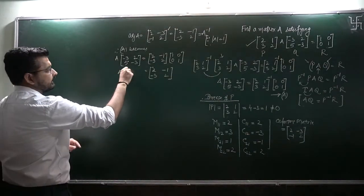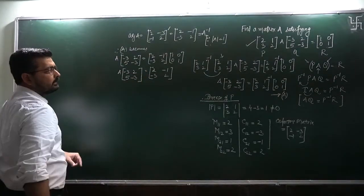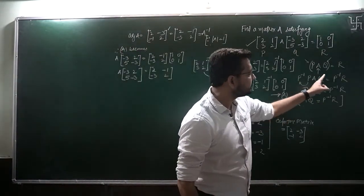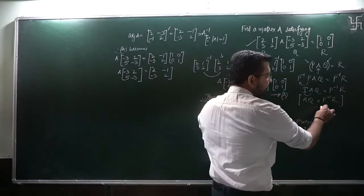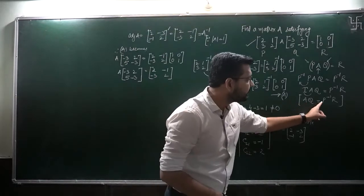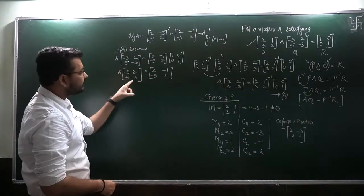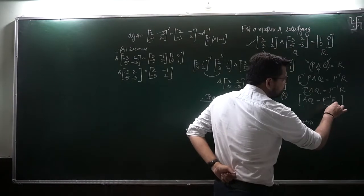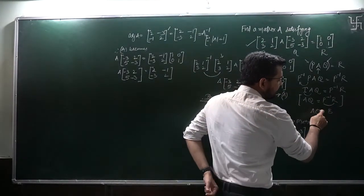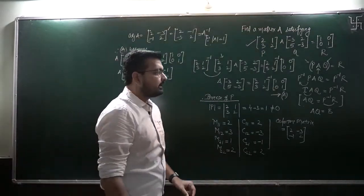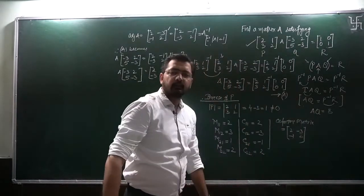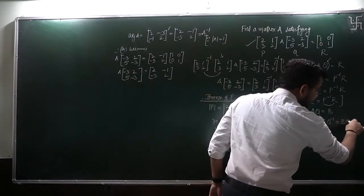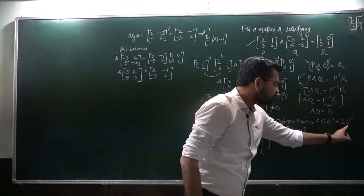Now substitute this inverse value back. Equation A becomes: A into [-3,2;5,-3] equals [2,-1;-3,2] into [1,0;0,1]. Since right-hand side involves identity, multiplying any matrix by identity doesn't change it. So equation A simplifies. Now the next concept: I need to eliminate Q. To eliminate Q, multiply by Q inverse on the right-hand side.